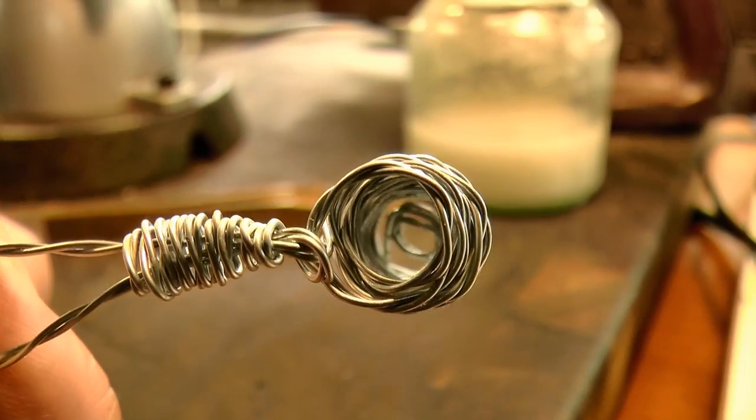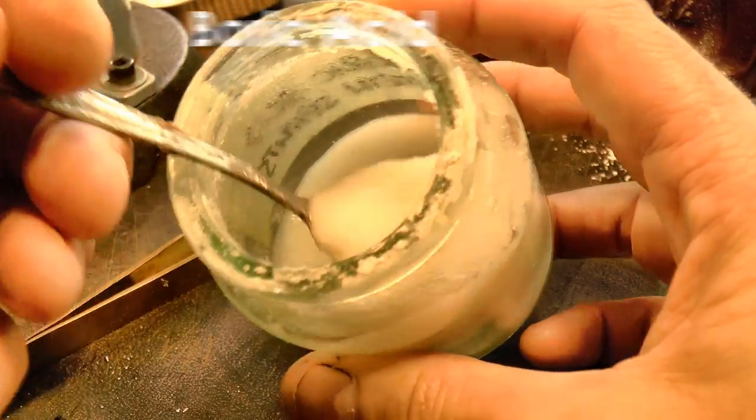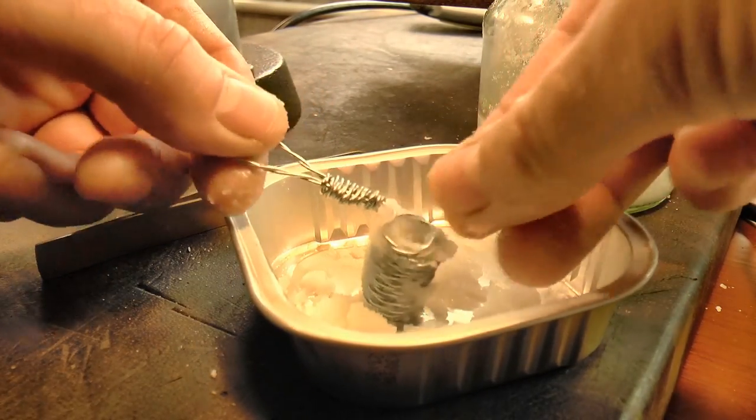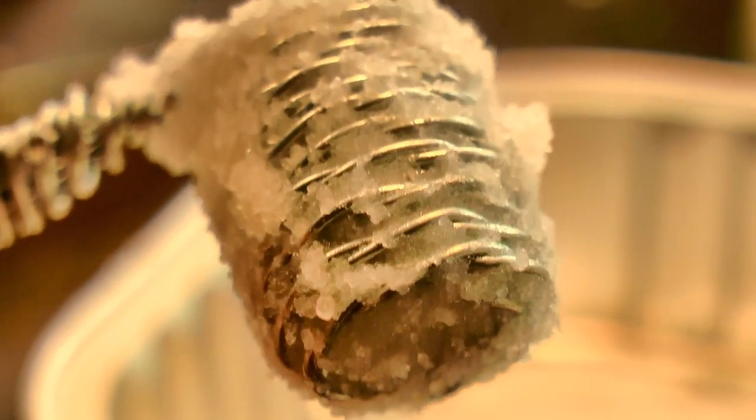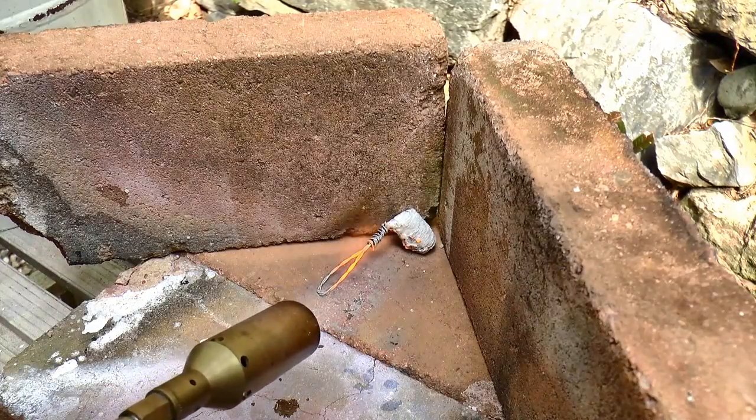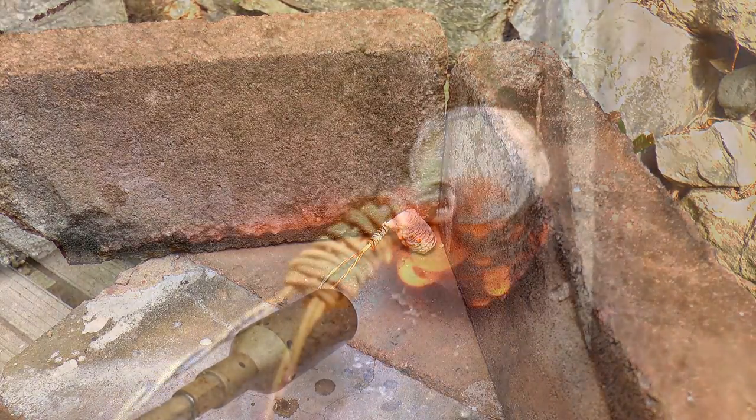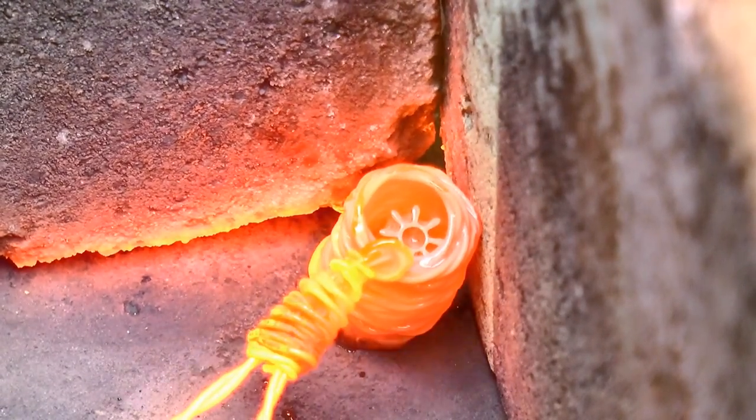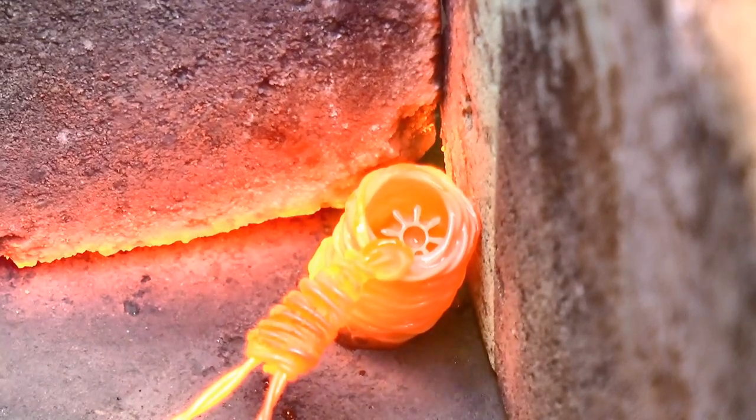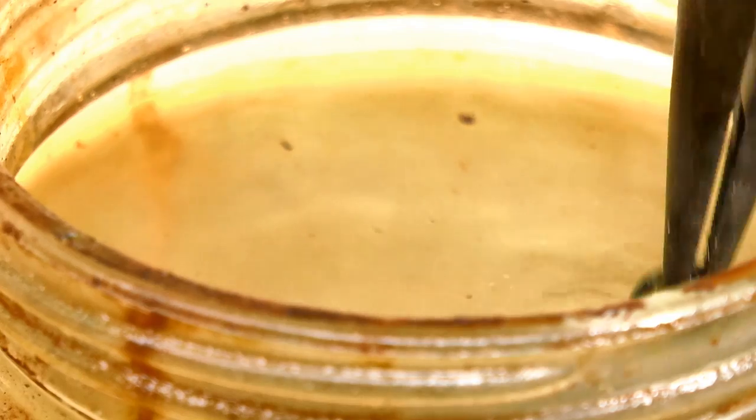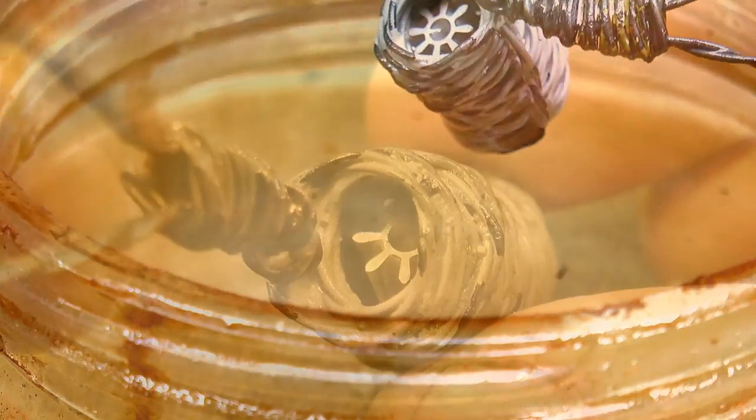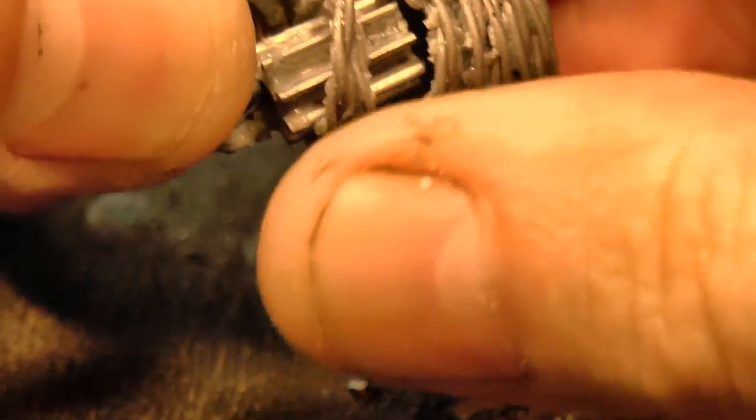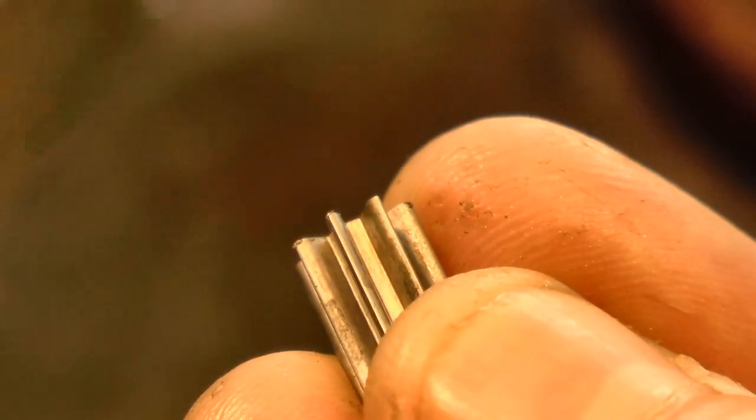I'm using a wire basket to hold the part. And I also coated it in a mix of boric acid and denatured alcohol to keep the scaling to a minimum. A light touch with the file confirms that the hardening has been successful.